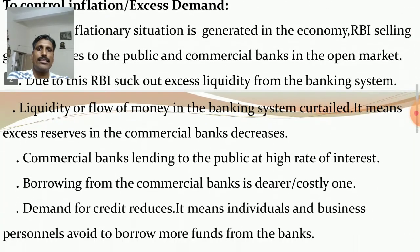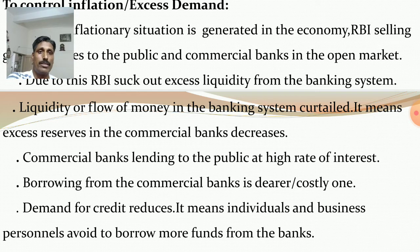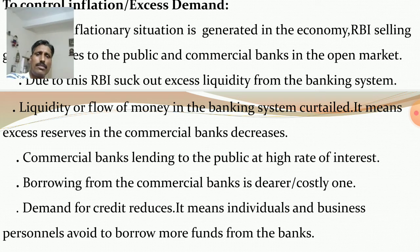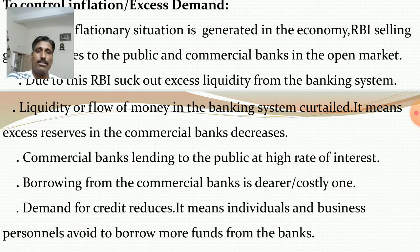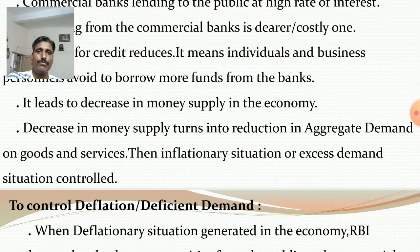When excess reserves in the commercial banks decrease, commercial banks lend to the public at a high rate of interest. When commercial banks charge a high rate of interest, borrowing from commercial banks becomes dearer or costly for the public — individuals, business personnel, traders, merchant holders, and investors. So demand for credit reduces, because borrowing is a dearer one. Individuals and business personnel avoid borrowing more funds from the banks, which leads to a decrease in money supply in the economy.